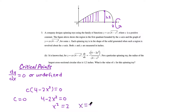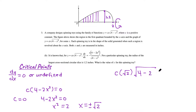Setting 4 minus 2x squared equal to zero gives x squared = 2, so x = ±√2. We use x = √2 since we're in the first quadrant. Plugging √2 into the original function: c times √2 times the square root of (4 minus 2) = c times √2 times √2 = 2c. Setting this equal to 1.2 (the given radius), we get 2c = 1.2, so c = 0.6.